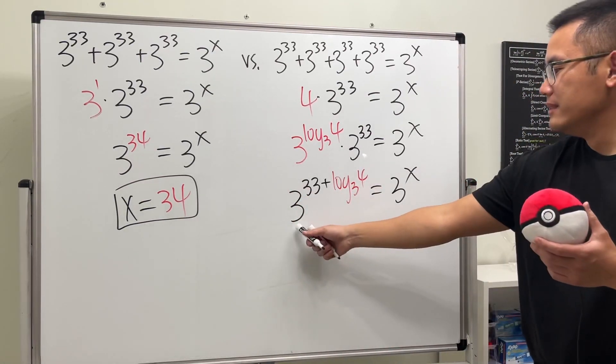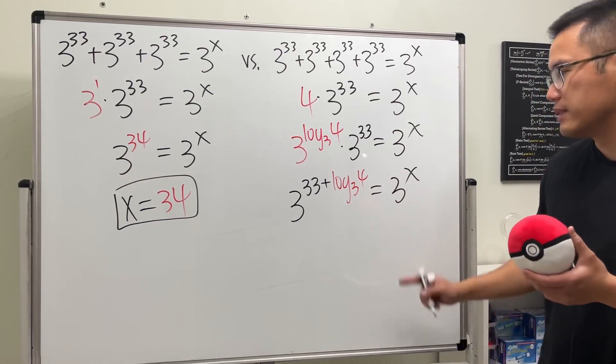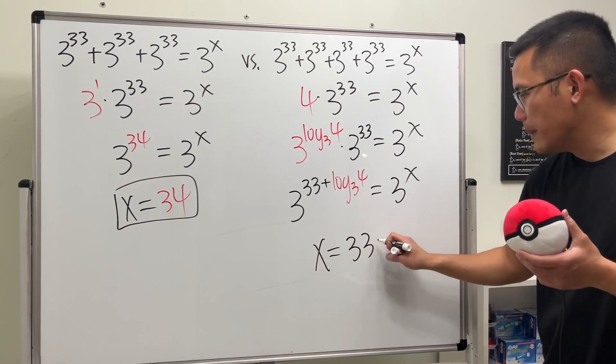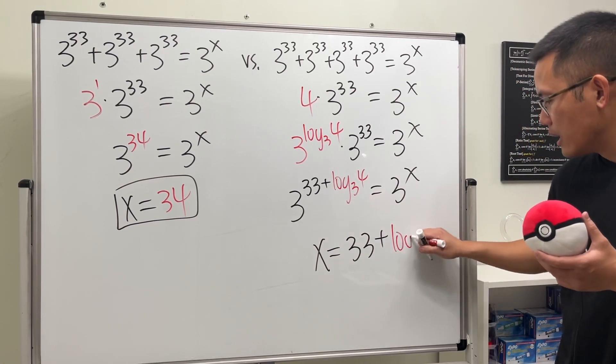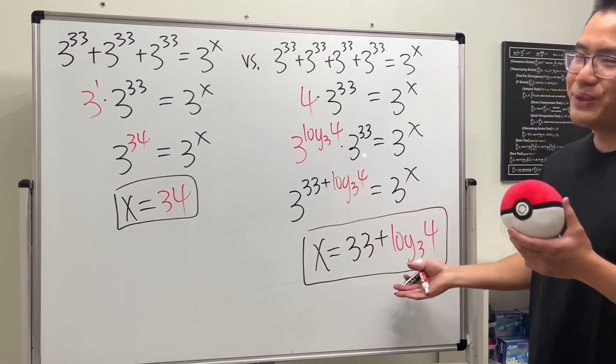Like earlier, now they have the same base, so the exponents have to equal. So x = 33 + log₃4, and with that we are done. Pretty cool, huh?